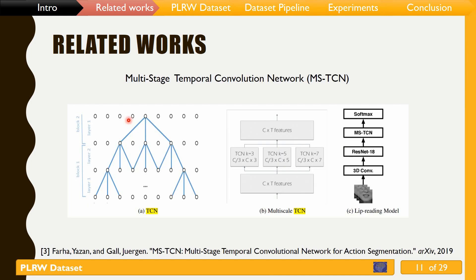The state-of-the-art method in word-level lip reading, as I mentioned, is MSTCN — a Multi-Stage Temporal Convolution Network. It consists of a 3D convolution layer followed by an 18-layer residual network, a multi-stage temporal network, and a softmax layer.